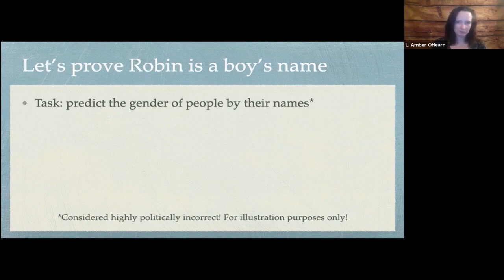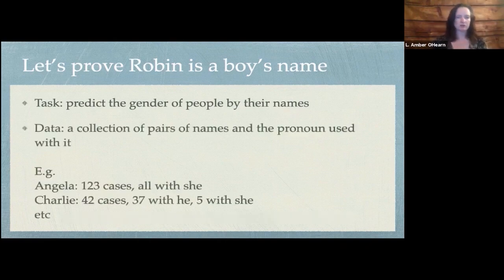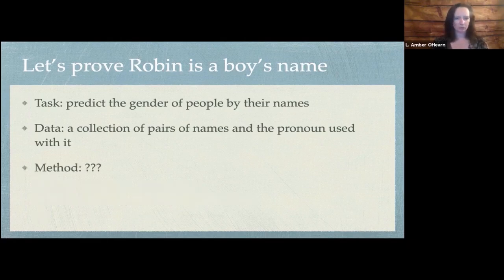Note that this is considered very bad because of course you're supposed to ask the person and not just make an assumption, but let's suppose we're going to try to do that. So we've got, for data, a collection of pairs of names and the pronoun that happened to be used with it. For example, maybe we had 123 cases of Angela and they all came with 'she', and we had 42 cases of Charlie and the vast majority of them were 'he', a few of them were 'she', etc. Now what are we going to do to try to make an algorithm that will guess correctly the gender of people by their names?